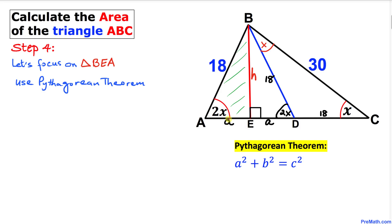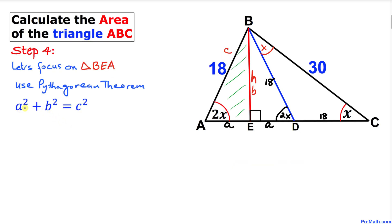Here's our Pythagorean formula. Filling in the blanks: A is 'a', B is H, and C is 18. So we write A² + H² = 18².